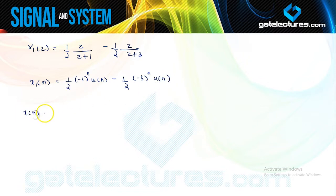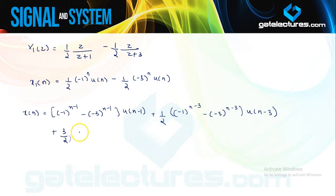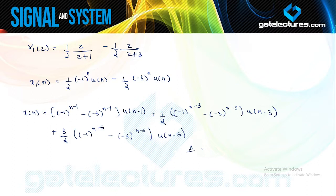Now we already know the relation between X(N) and X1(N). Writing the expression directly: X(N) = [term with U(N−1)] + (1/2)[(−1)^(N−3) − (−3)^(N−3)] · U(N − 3) + (3/2)[(−1)^(N−5) − (−3)^(N−5)] · U(N − 5). This is the required inverse Z-transform. We have now covered all the models of inverse Z-transformation — these are all the possible question types you may get for inverse Z-transforms.